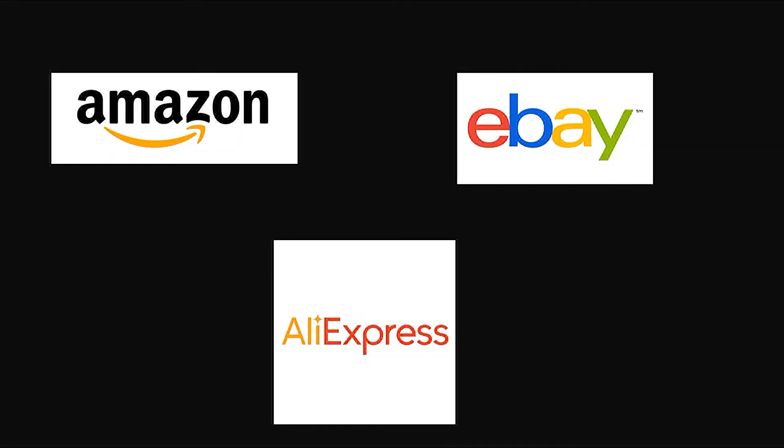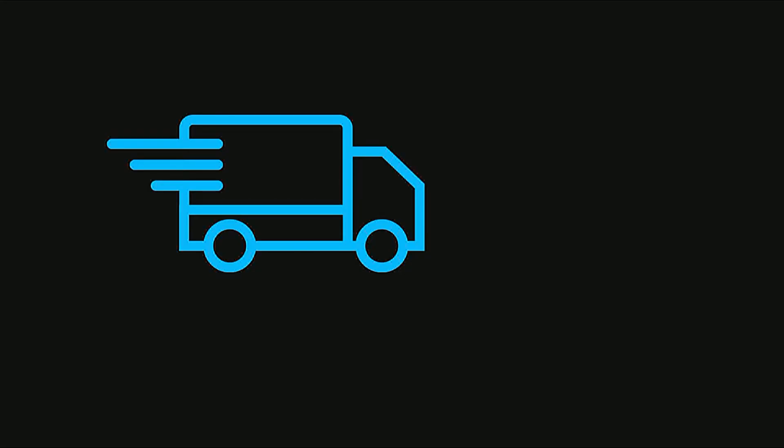I'm pretty sure you guys are familiar with websites like Amazon, eBay, and Aliexpress. If you buy stuff from these websites, they deliver the products to where you live, and this includes a shipping cost or delivery cost.